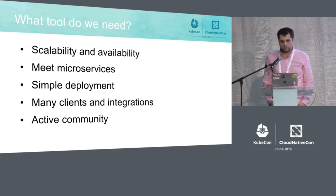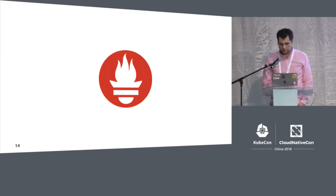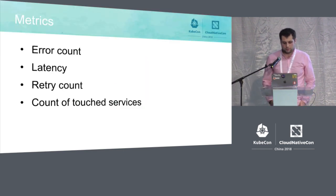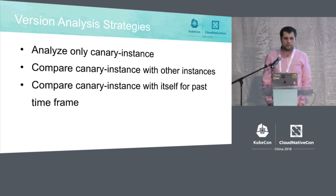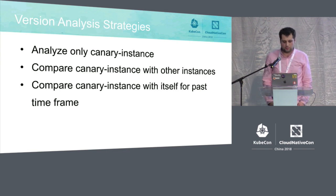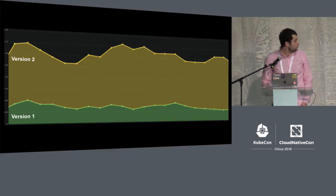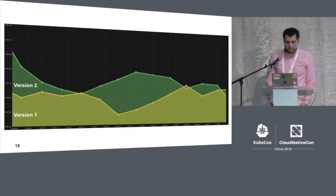We also need a tool for monitoring. It should be a very good fit for microservices, and we found that Prometheus is. What can we monitor? The error count, the latency, and the request count — and it should be done dynamically. For analysis, we can analyze just the Canary instance, compare it with another instance, or compare it with the same instance from a previous time period. For example, you can see that for error count, the second version becomes worse — so we cannot use it. But for latency, we can find it's okay and continue deployment.